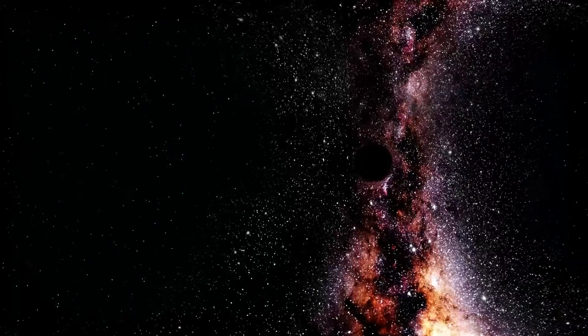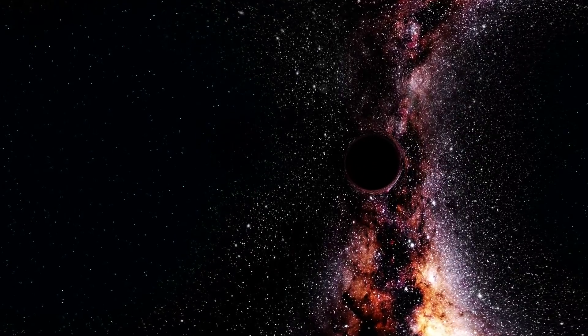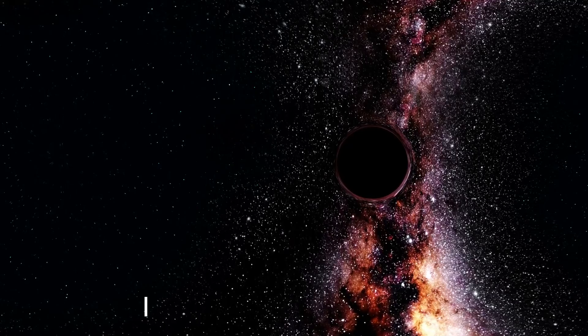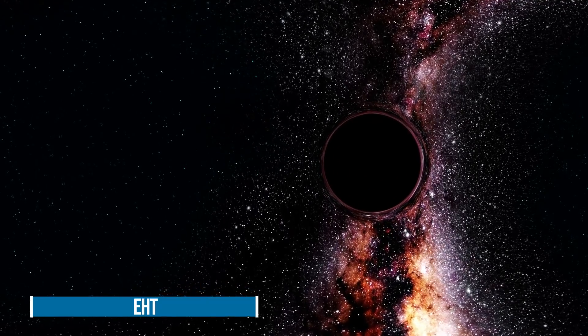The first direct visual verification that Einstein's prediction of a black hole was right came in the form of a picture captured by the Event Horizon Telescope, EHT, of the galaxy M87.